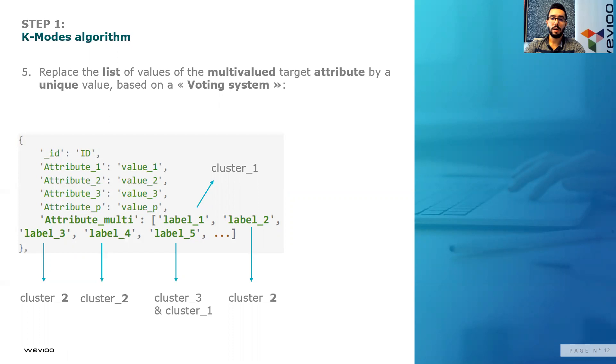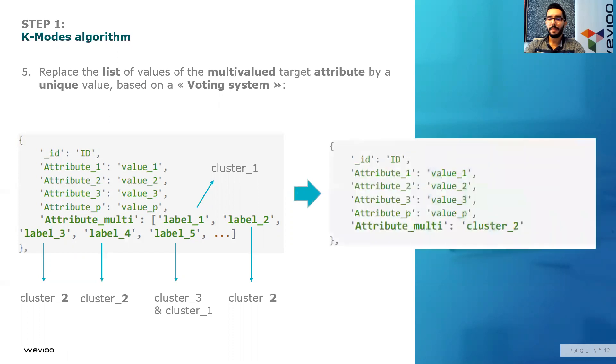What the voting system does is it replaces the multivalues, the list of values, by a unique value, which is cluster two, which is the cluster that is most represented in the list of values of that categorical key.